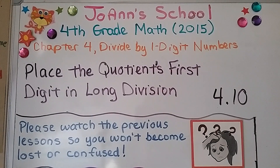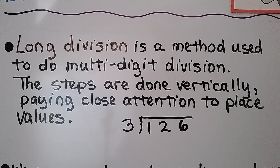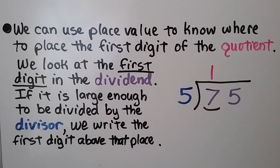Lesson 4.10: Place the quotient's first digit in long division. Long division is a method used to do multi-digit division. The steps are done vertically, paying close attention to place values. We can use place value to know where to place the first digit of the quotient.